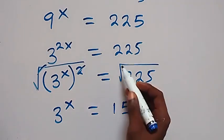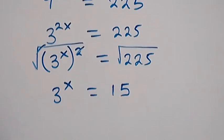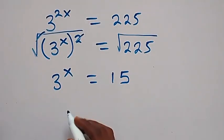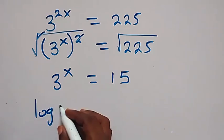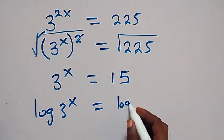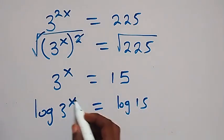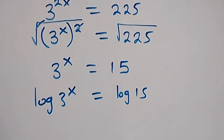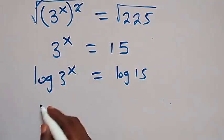Since this should be a positive number, we take the positive result. We can now take the log on both sides, so we have log of 3 raised to power x equals log 15.